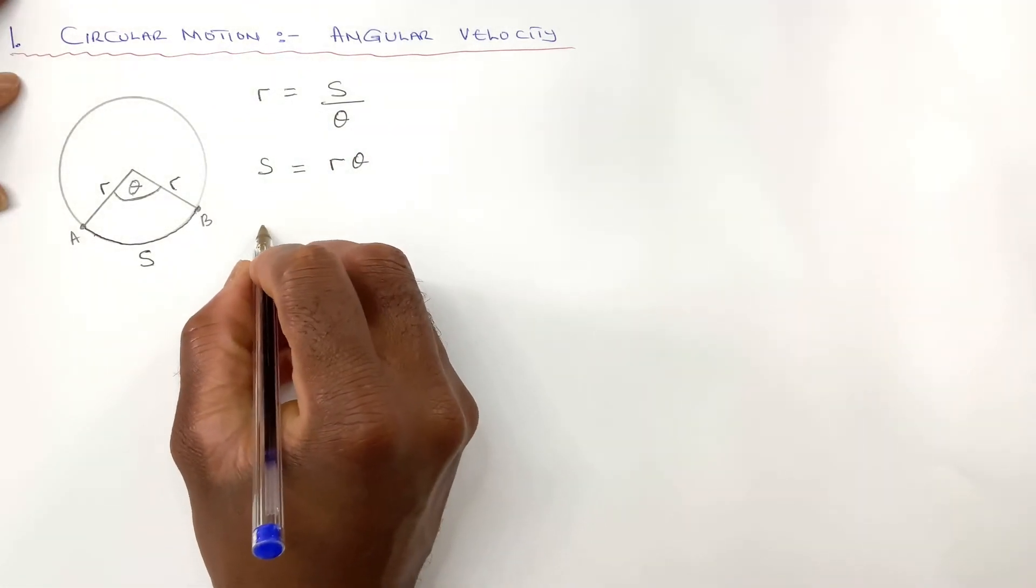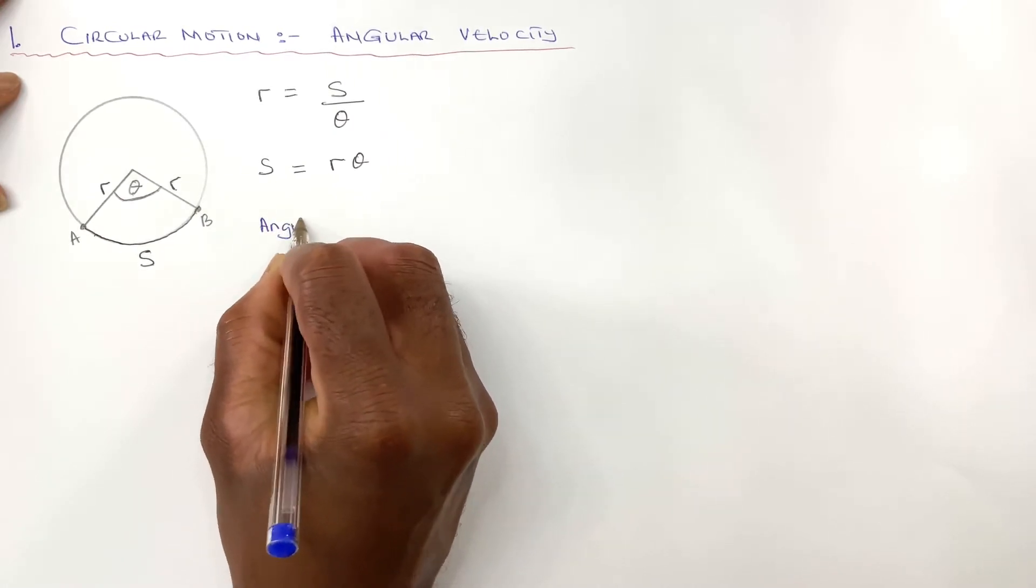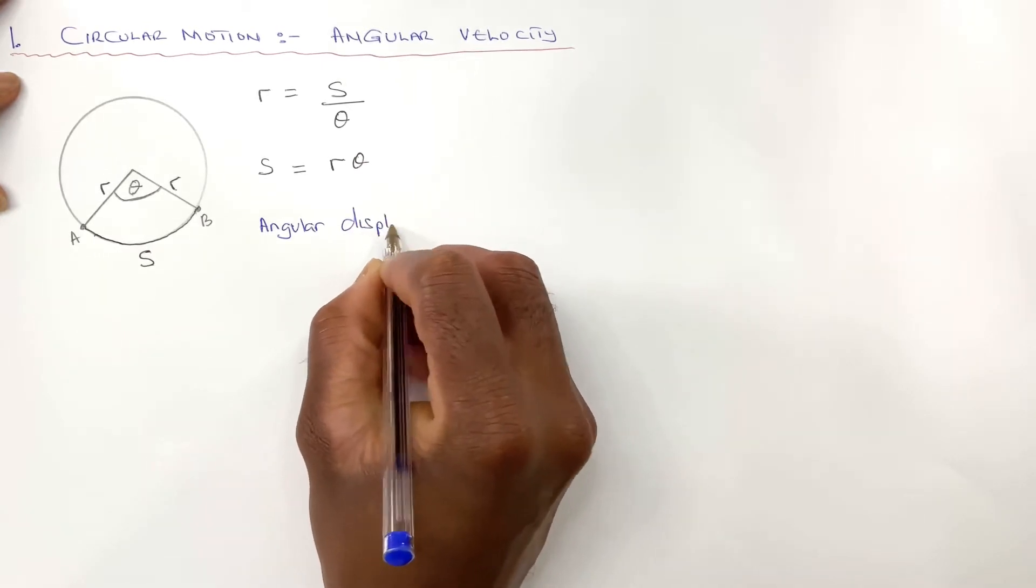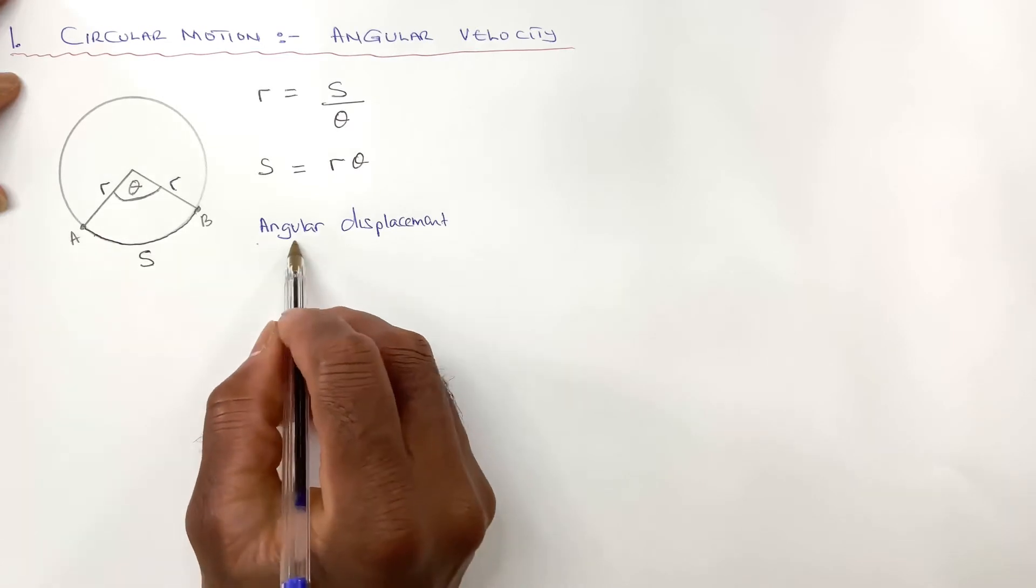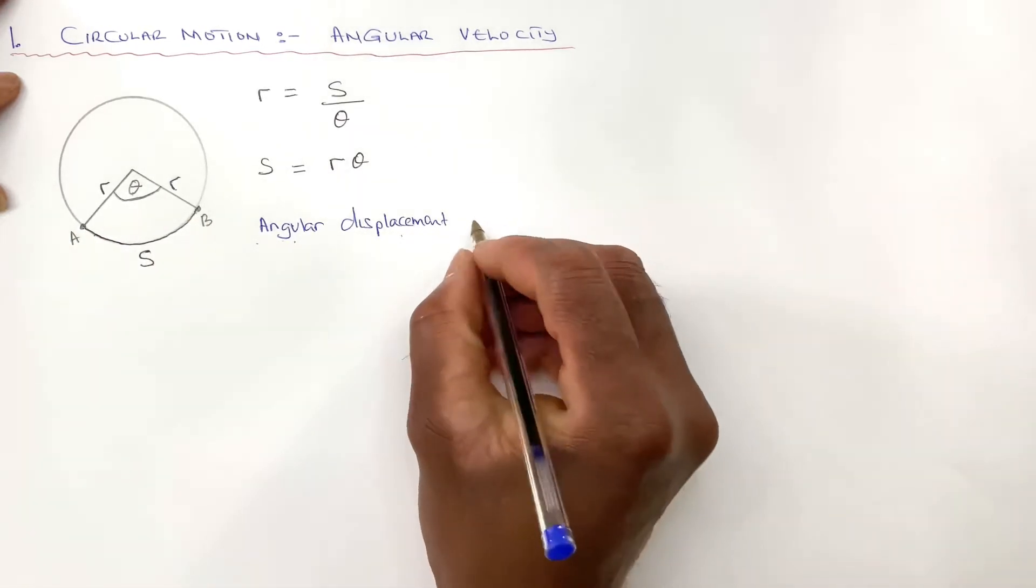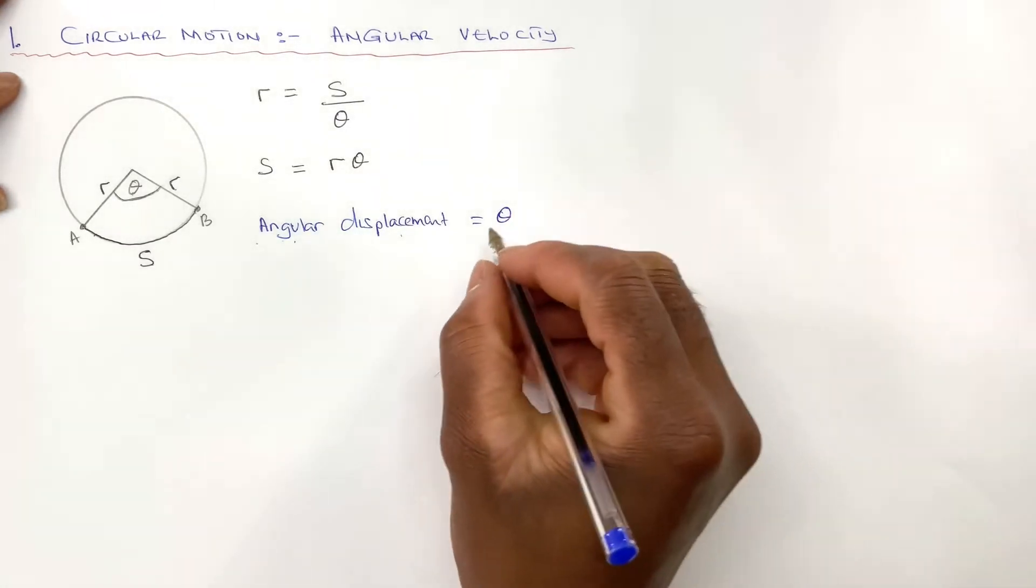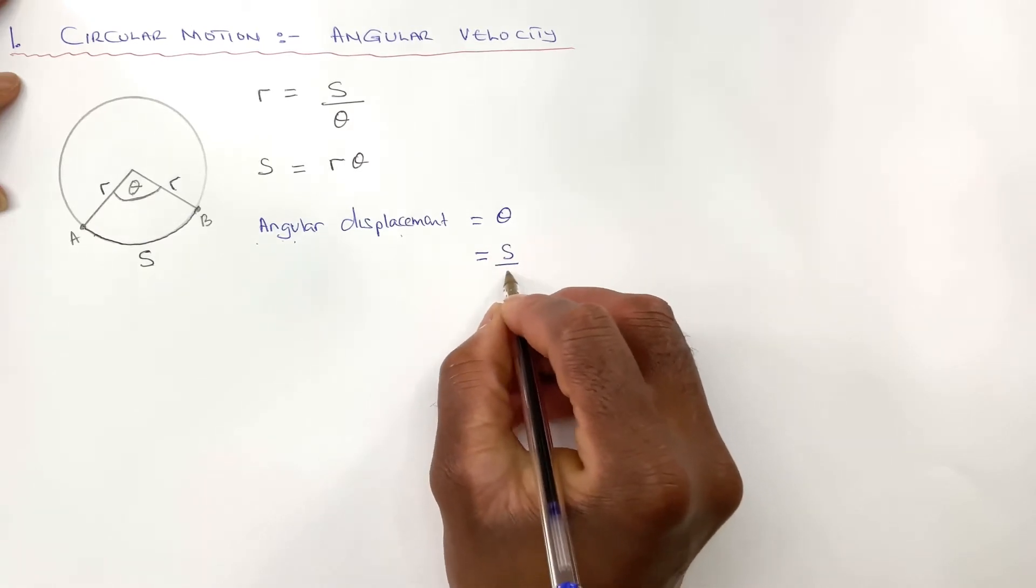A few things to iron out is that we know that the angular displacement, because the name says angle displacement, so you can go from A to B, is going to be theta. And we know what theta is. Theta is S over R.